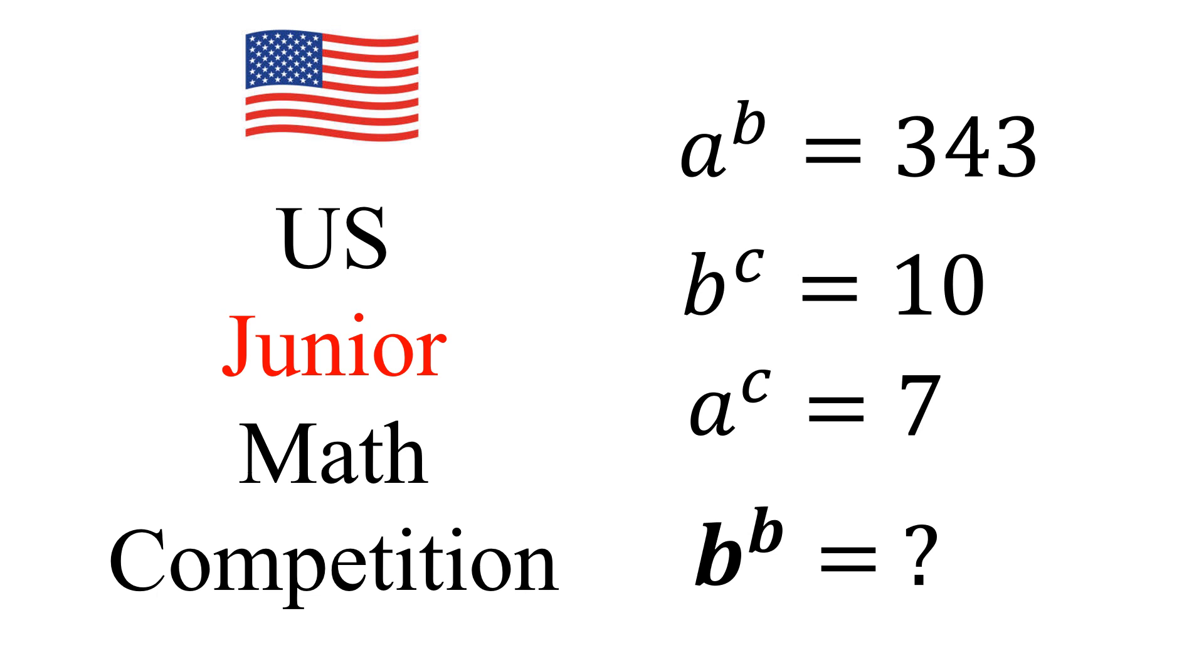Hi everyone, in today's video we are going to solve this question. The question is: a to the power of b equals 343, b to the power of c equals 10, a to the power of c equals 7. What is the value of b to the power of b?